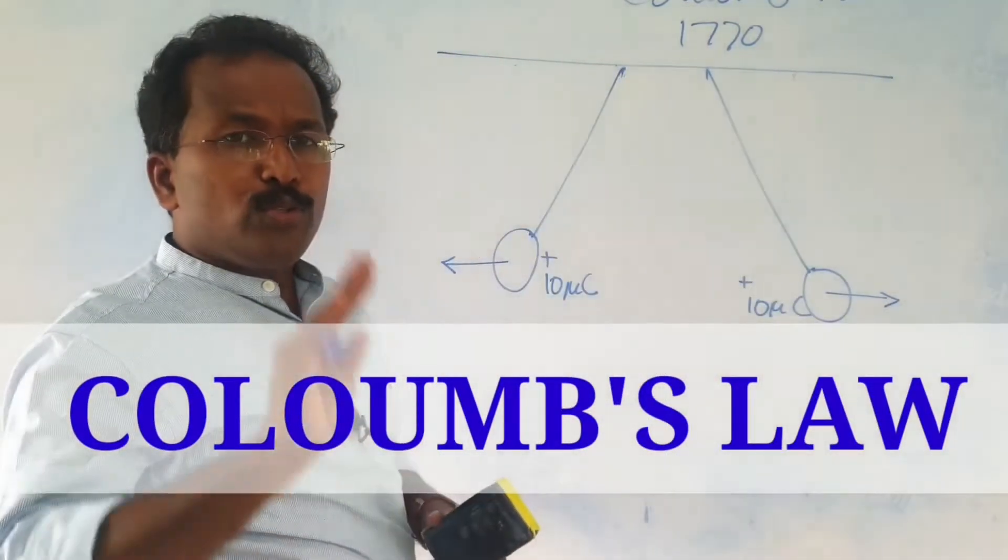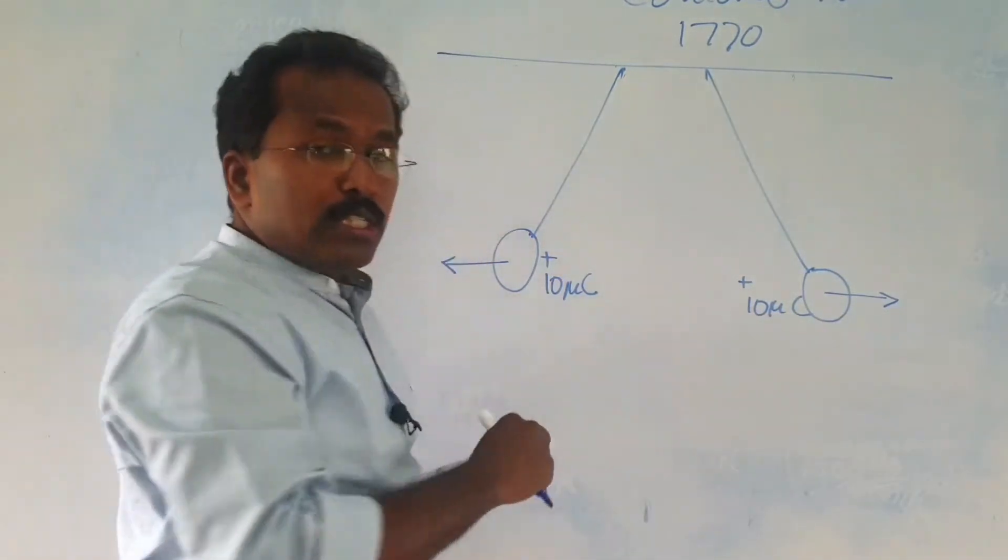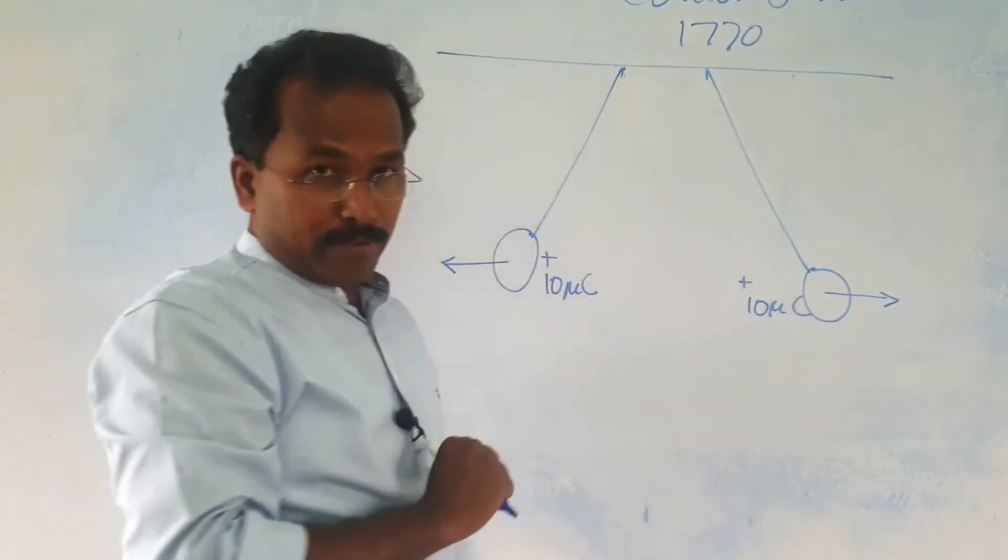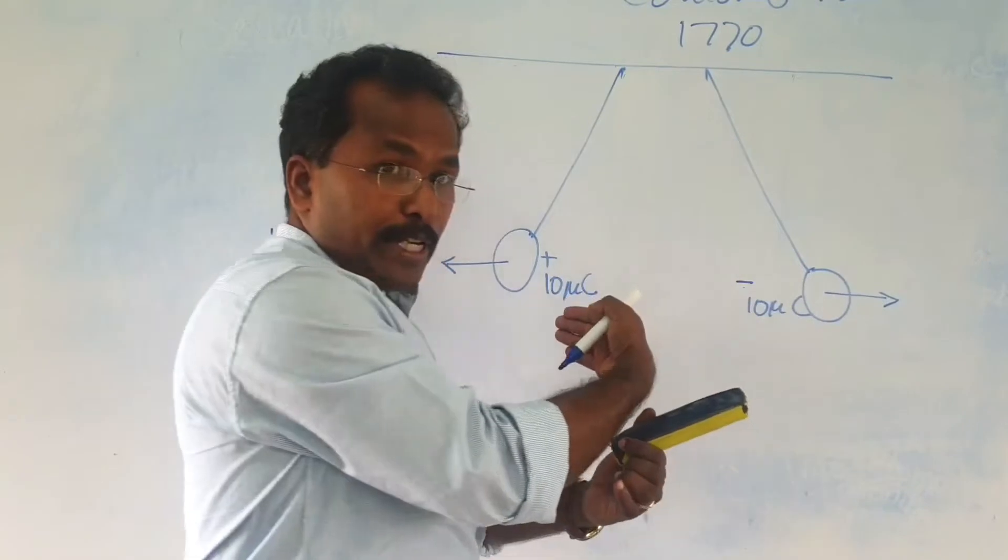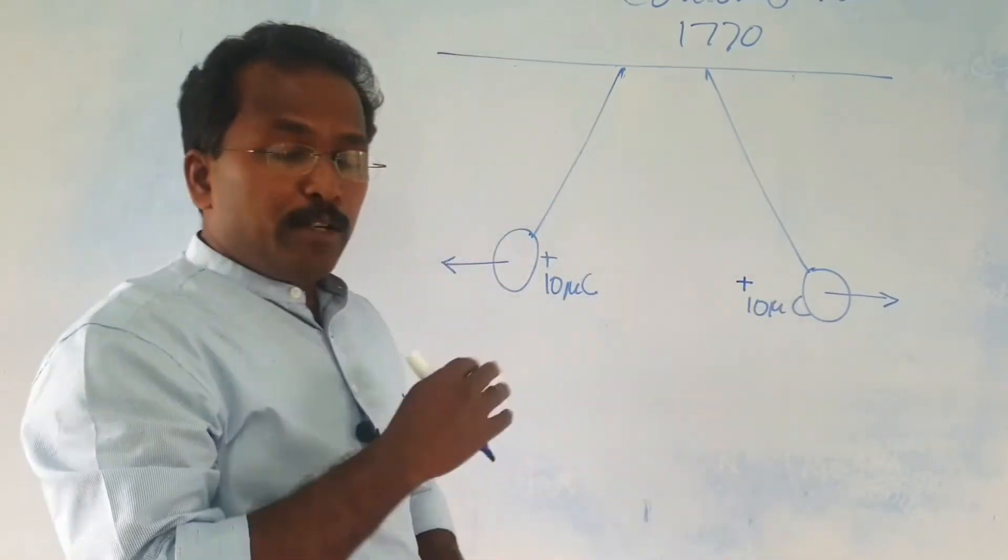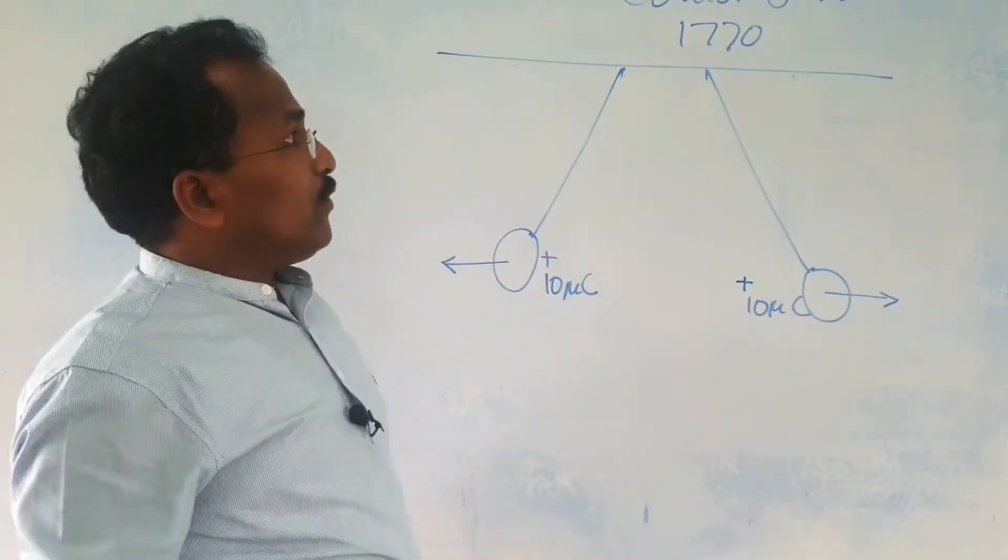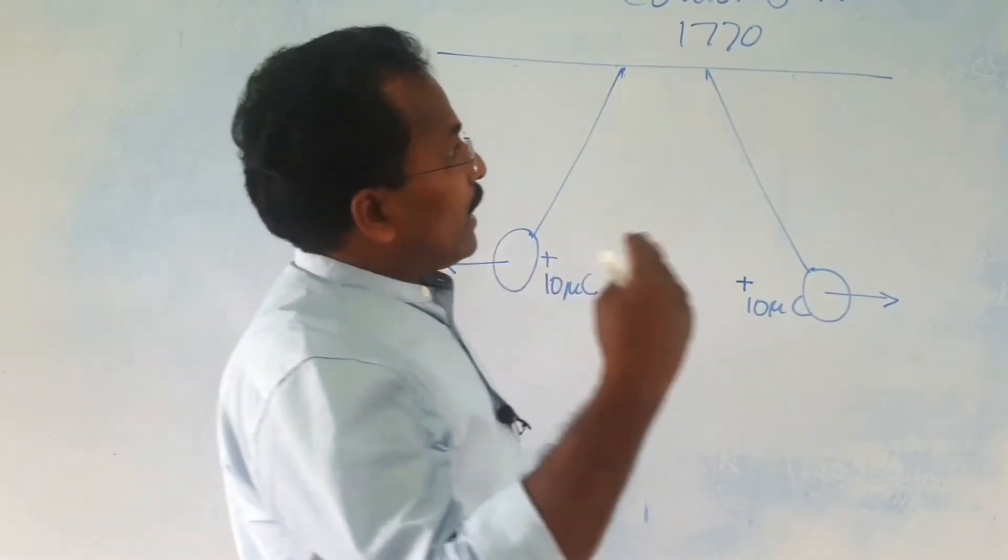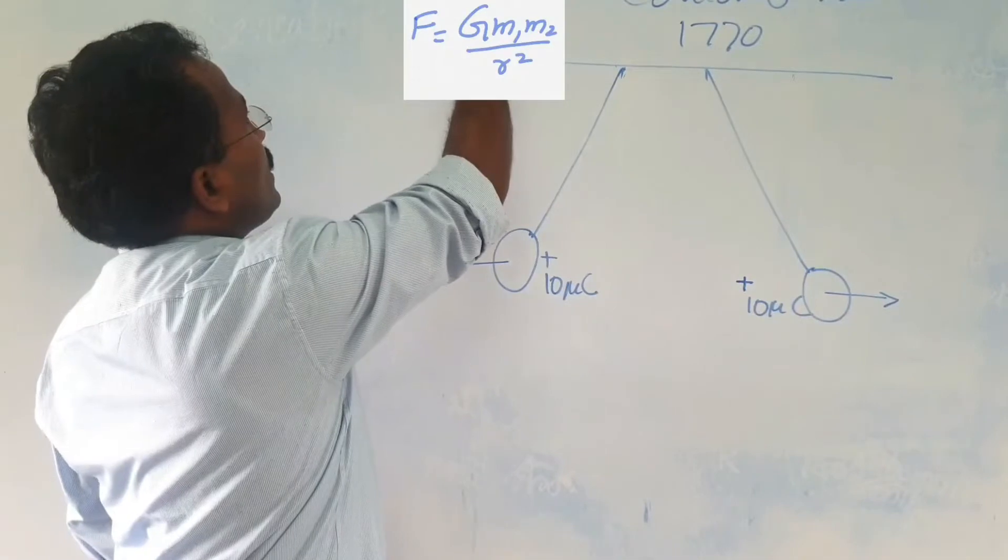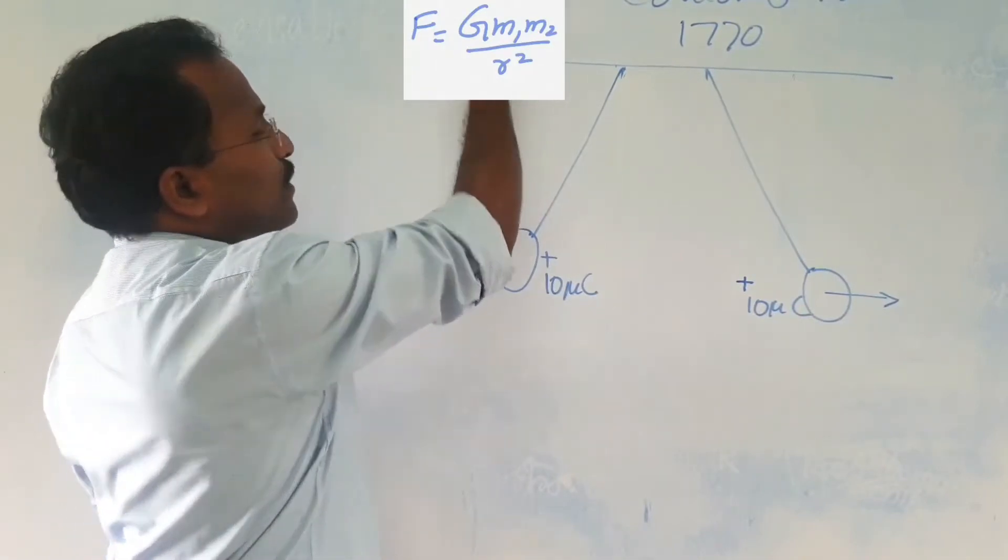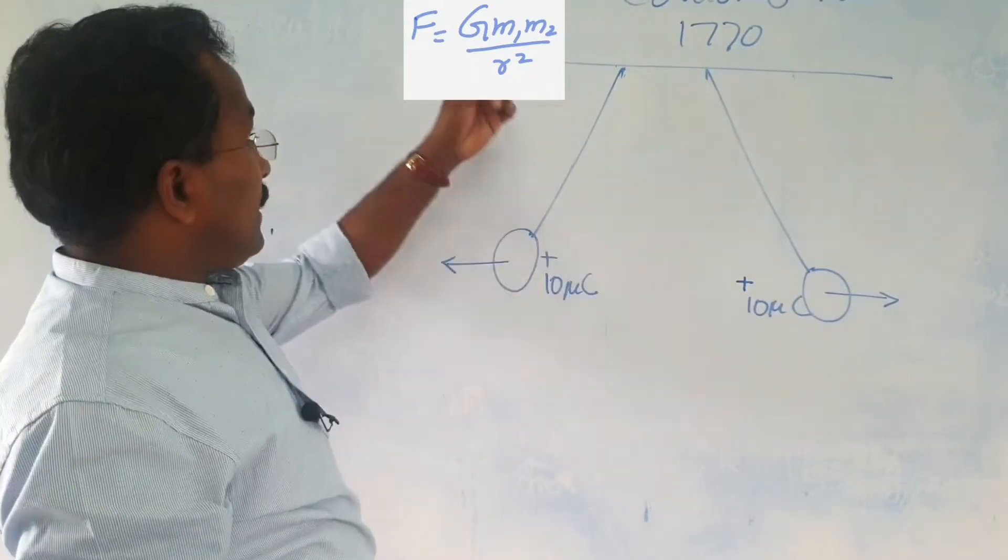Now, using Coulomb's law you can find how much force is there between these two. Here you have two charges repelling or if I give one as negative charge, they will be attracting. It can be attraction or repulsion depending on what type of charges you keep here. Now, we studied Newton's law. I write Newton's law here for you to recollect: F is equal to g m1 m2 divided by r square. If you want to find the force between two masses, this is the law you use.